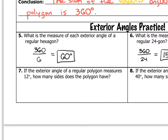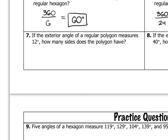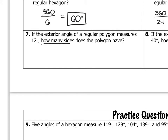Number seven: if the exterior angle of a regular polygon measures 12 degrees, how many sides does the polygon have? We need to set up an equation. I know that 360 divided by the number of sides — which I'll call x — is equal to 12. Doing some algebra, I multiply both sides by x to get 360 equals 12x, and therefore x equals 30. So, 30 sides.